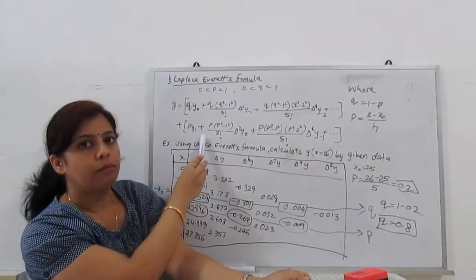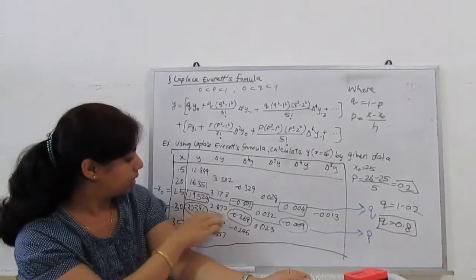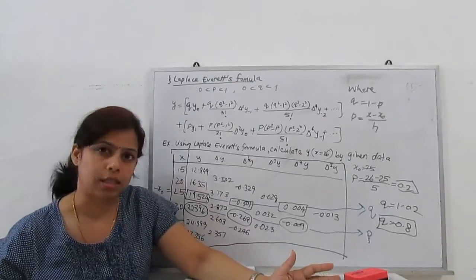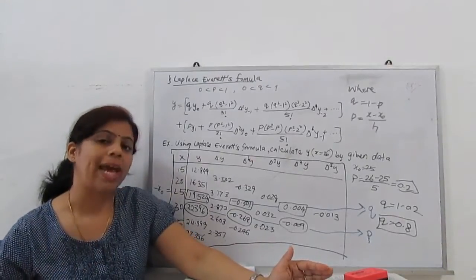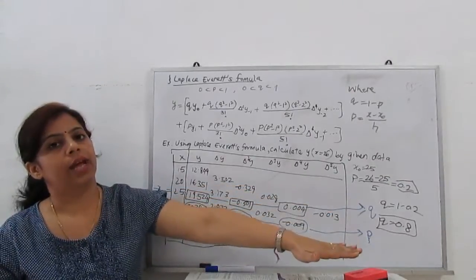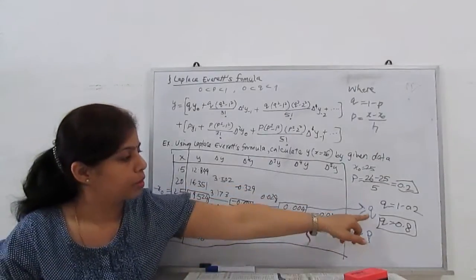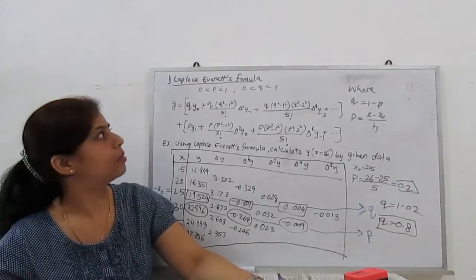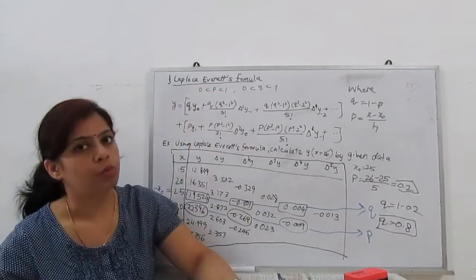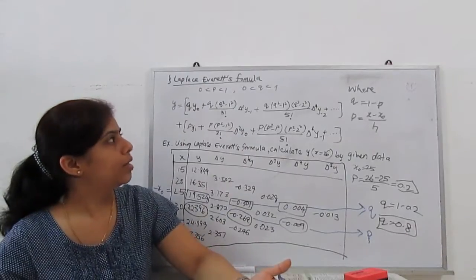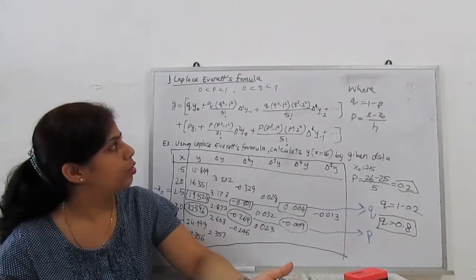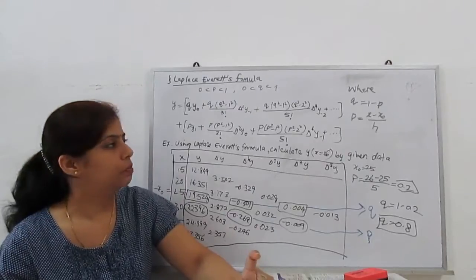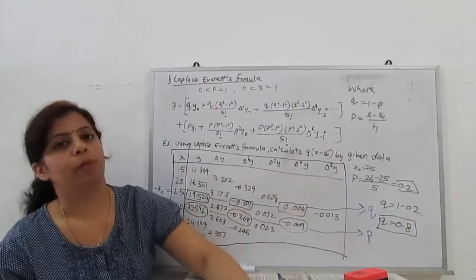For the P terms, we have to substitute this, this, and this. For Q, we have to substitute these three. None of the other values we have to see - just decide X0, then X1. The X0 line and X1 line: X0 substituting in Q, X1 substituting in P. Then the other condition for this Laplace average formula: P lies between 0 to 1, same like the Basel, and Q also lies between 0 to 1. P and Q because Q is 1 minus P.